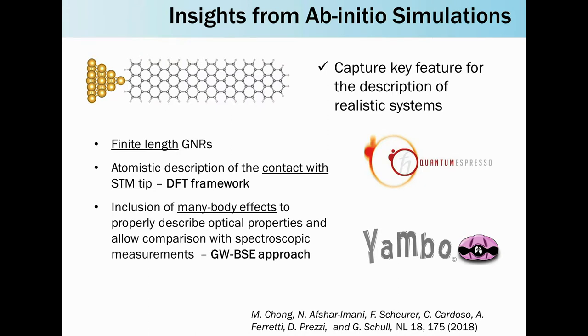This clearly points to the fact that the photoluminescence emission is activated by some coupling from the tip and the ribbon terminals. If you want to have some insight from ab initio simulation, you have to capture the key features of your system. Of course, you cannot describe your 20 nanometer long ribbon with the micrometer size tip, but there are a number of features that have to be there in your simulation. First, the ribbon has to be finite. Secondly, you have to consider the contact with the tip. Third, you have to include many-body effects because these were demonstrated to be crucial to describe the optical properties. The first part was done within a density functional theory framework using the Quantum Espresso package, and the second part was included within the GW Bethe-Salpeter approach using the Yambo code.